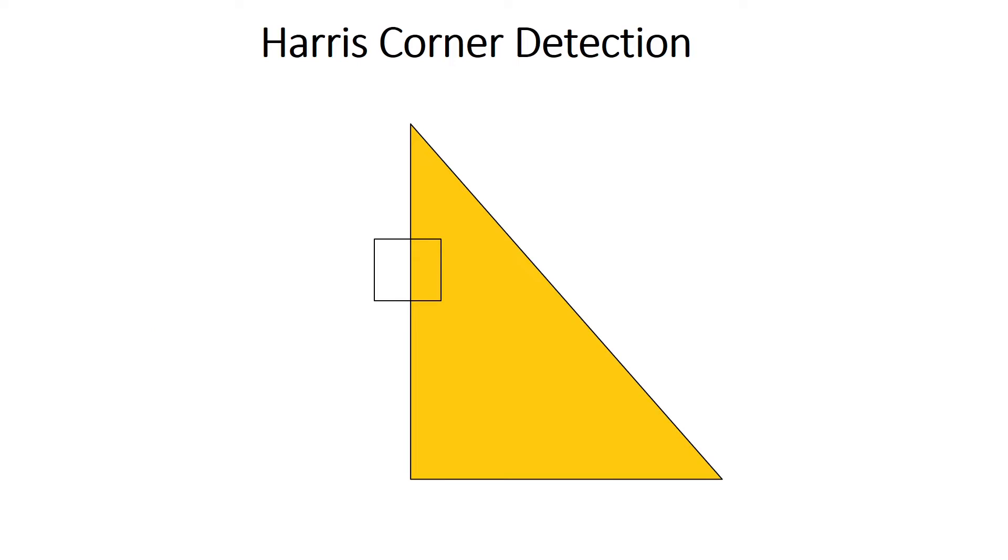So how about placing the frame on the edge of the triangle. By moving the square frame along with the direction of the edge, you will also find out that there is still no change inside the frame. So in this situation, Harris Corner Detection still cannot detect any feature.